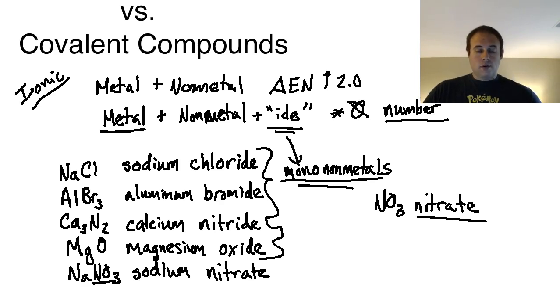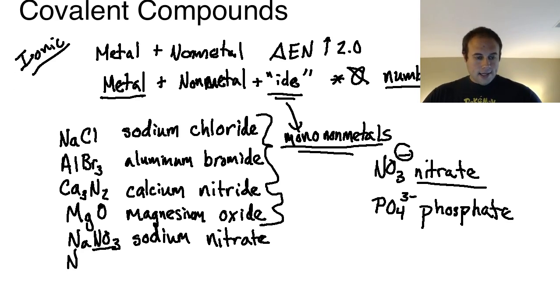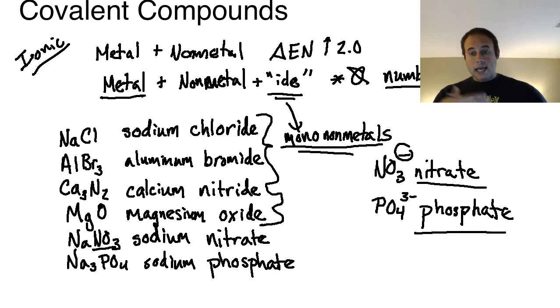This "-ide" portion is going to be when we have the mono nonmetals that we're picking out. As soon as we start coupling these—another one for instance, you could have phosphate with a three minus charge. If I were to pair something with the phosphate, let's say sodium, then the name of this would be sodium phosphate. I'm simply utilizing the name of the polyatomic at the end when I get ready to name that, if it's multiple nonmetals that are strung together like that.